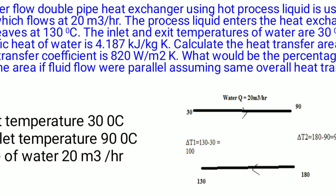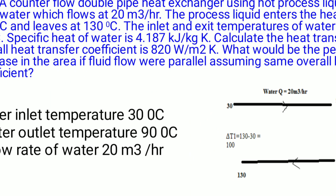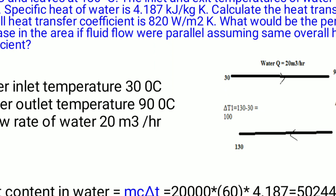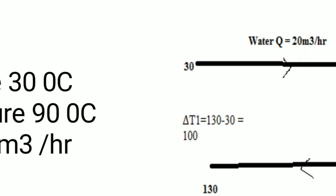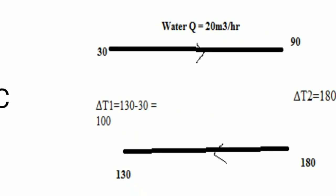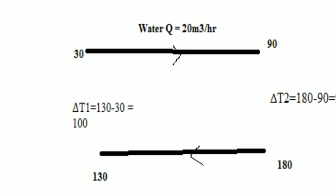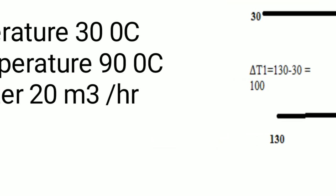In this counter-flow exchanger, the hot process liquid enters at 180°C and leaves at 130°C, while water enters at 30°C and leaves at 90°C. The fluids flow in opposite directions. Delta T1 = 130 − 30 = 100°C (hot liquid exit vs. water inlet) and delta T2 = 180 − 90 = 90°C (hot liquid inlet vs. water exit).